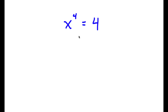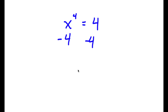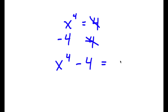All right, so in this problem I have x to the power of 4 is equal to 4. To solve this, I'm going to first start by subtracting 4 on both sides. So then these two cancel out, and now I have x to the power of 4 minus 4 is equal to 0.